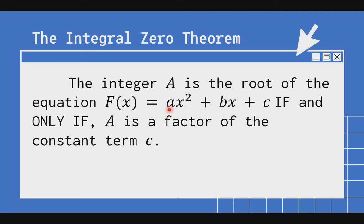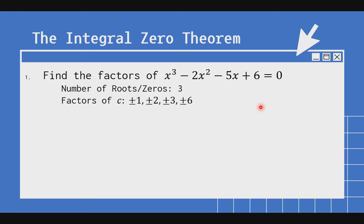Ano ba ang integral zero theorem? The integral zero theorem states that the integer a is a root of the equation f(x) equal to ax squared plus bx plus c if and only if a is a factor of the constant term c. Para mas malinaw, ang ating polynomial ay may constant term c — isang number o integer magiging root lang siya kung factor siya ng c. So paano natin ito gagamitin sa paghahanap ng factors?